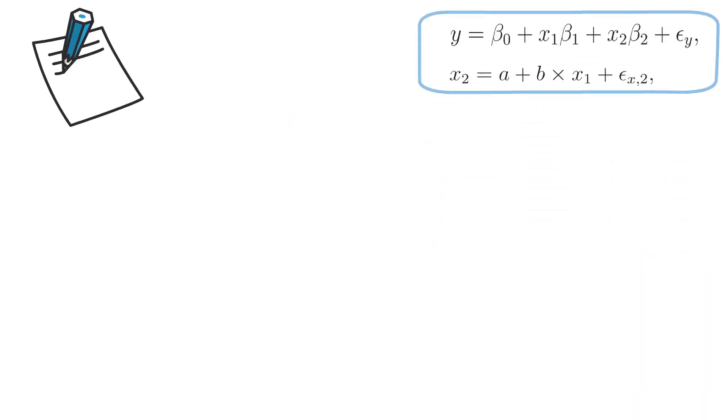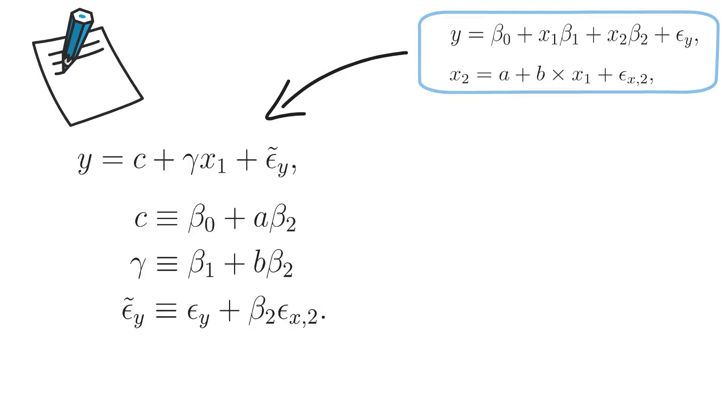So let's rewrite the last two equations as one equation. You will get that y equals a constant c plus gamma times x1 plus epsilon tilde y. So it's a linear regression model in x1 only.